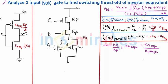Welcome to Win 5 Minutes. The agenda of this clip is to analyze a 2-input NOR gate to find the switching threshold of its inverter equivalent. As we have seen for a 2-input NAND gate, we'll follow the same phenomena.